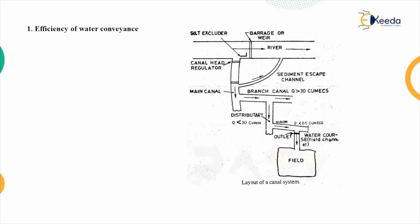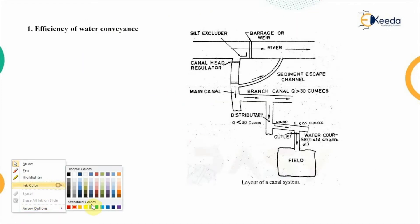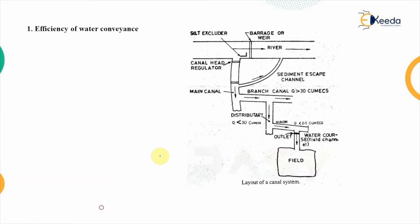If we look at a canal irrigation system, the water is diverted from the main river by constructing a barrage or weir, and that is transferred to the main canal and ultimately supplied to the field. That is the typical layout of the canal system.